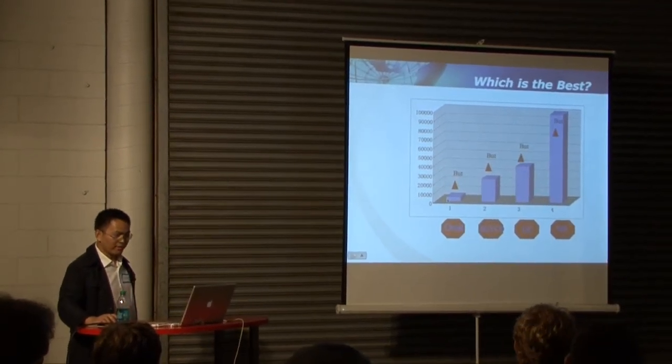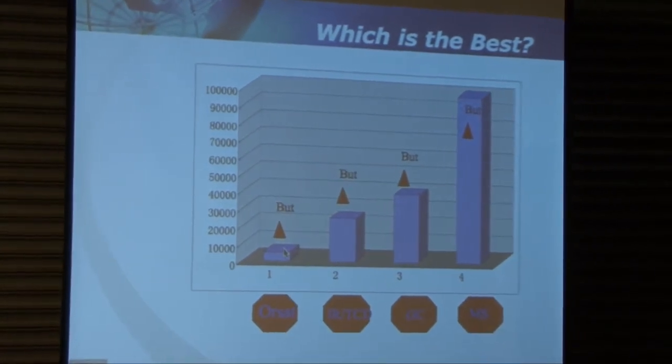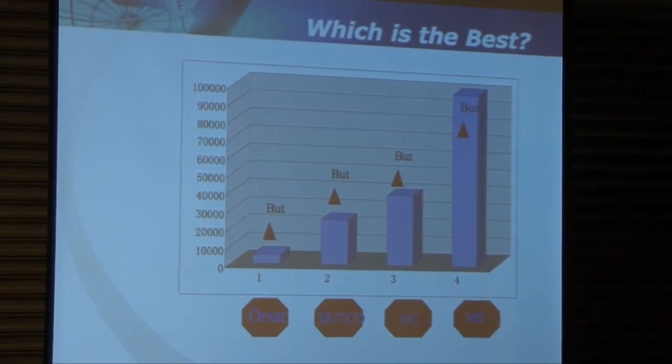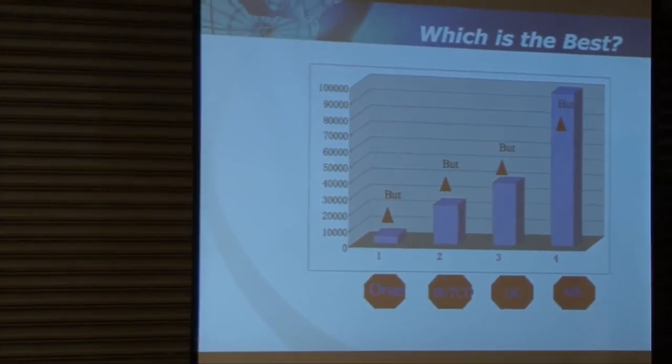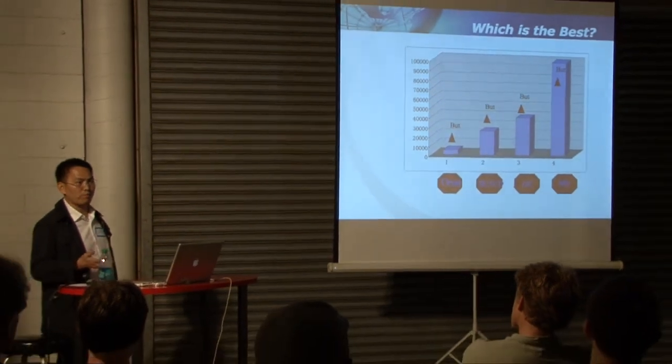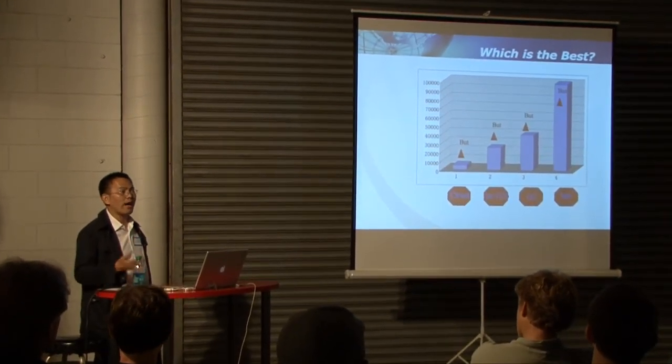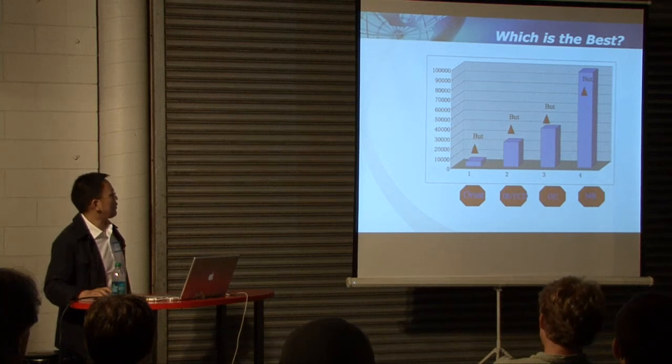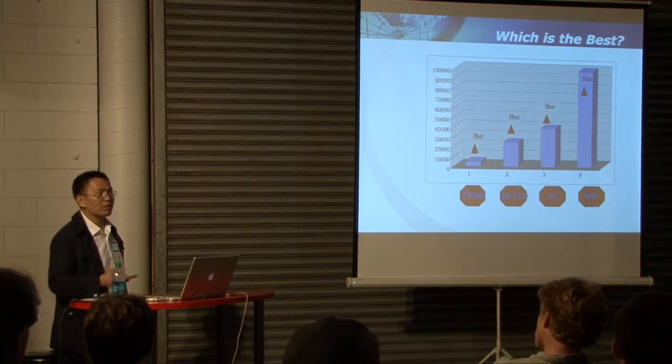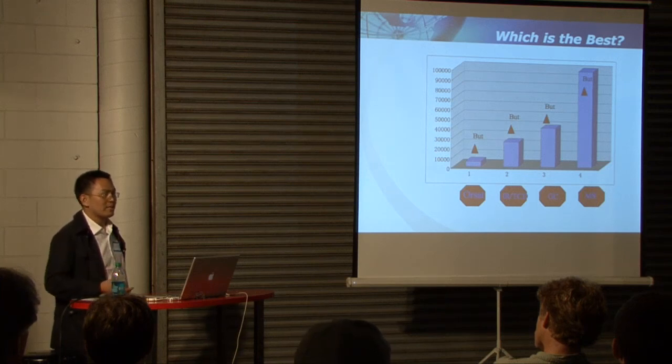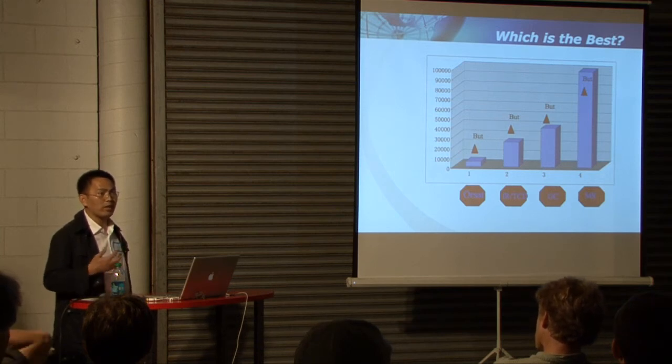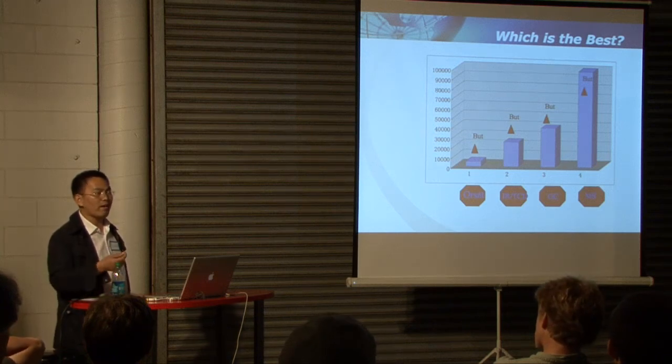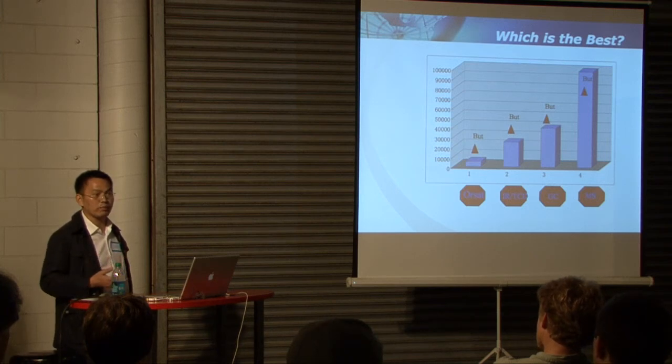So which one is the best? For Orsat, yes, very cheap, but they cannot be online. And it's time-consuming. And also you need some chemicals. So you need experienced people. For the IR and the TCD, they can be used online. But sometimes, some problem for analyzing the CH4 and H2. For GC, yes, it can be online. And also, it's not so expensive. But also, it's complicated. You should need some carrier gas, such as nitrogen, the high-quality, high-purity nitrogen for carrier gas. For MS, yes, it's very good, but very expensive. So we need a very good solution for this kind of online monitor system, for our gasifier system.